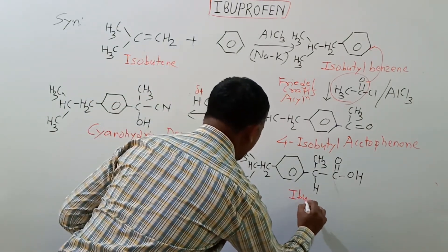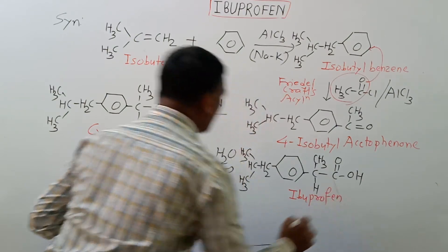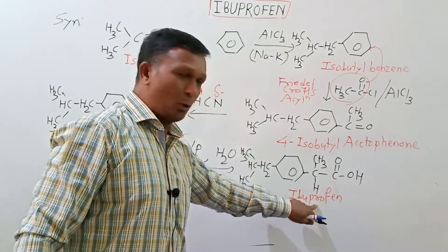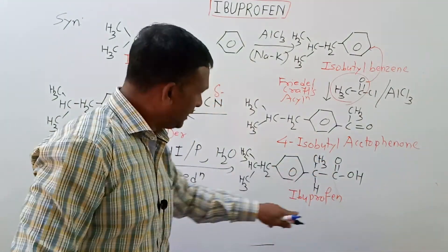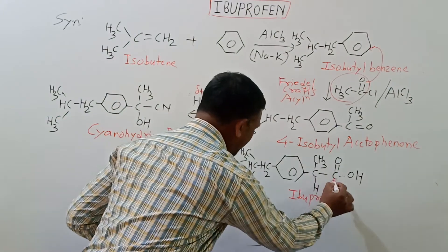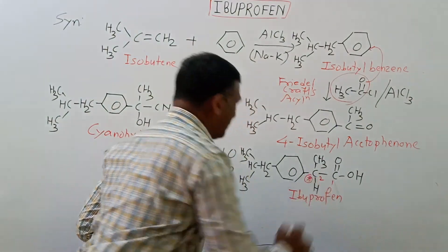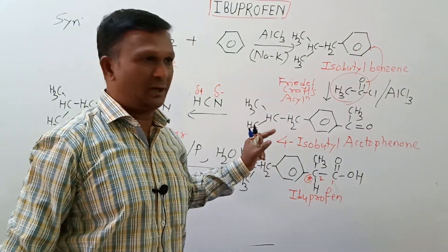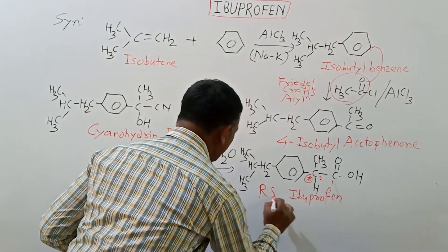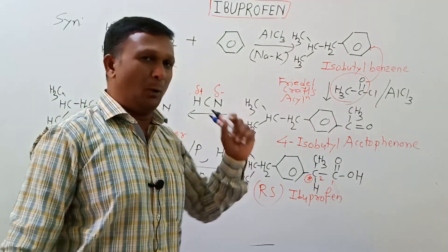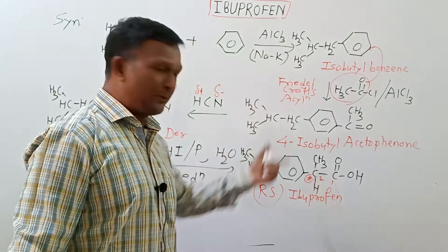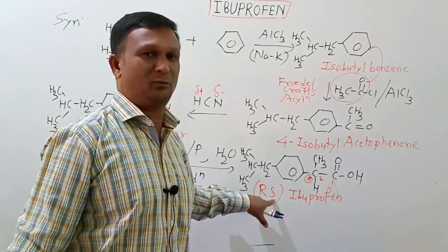Dear student, this is our final product ibuprofen. If you look at this name, IBU stands for this isobutyl group. This PRO stands for this propionic acid portion, while this FEN stands for this phenyl. One important point, this carbon which is carbon number 2 is a chiral carbon, due to which ibuprofen exists in its two isomeric forms R and S. The ibuprofen which is administered is the racemic mixture containing both the isomers. One important point is that the whole anti-inflammatory activity of ibuprofen is attributed to the S isomer.